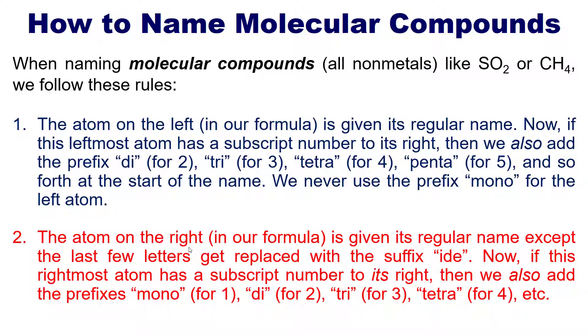If this rightmost atom has a subscript next to its right, then we also tack on the prefixes mono if the implied subscript number is one, di for two, tri for three, tetra for four, and so forth: penta, then hexa, then hepta, then octa, then nona, and deca. And that's as high as you need to know, I think.